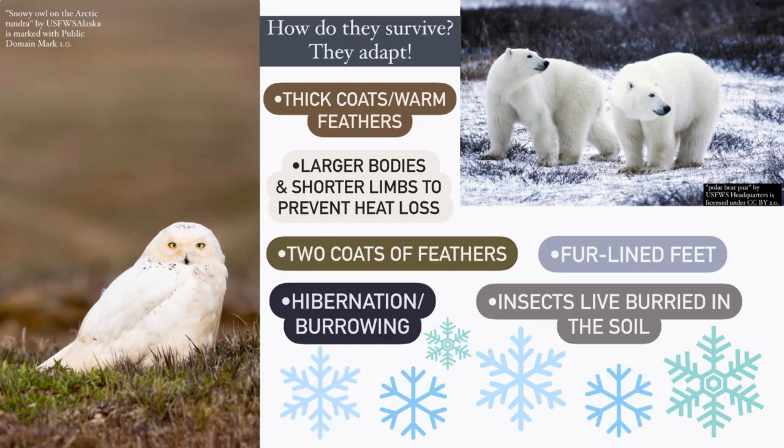In order to survive the conditions of the tundra, the animals have to adapt. Animals found in the tundra tend to have larger bodies and shorter limbs and tails in order to retain heat better and prevent heat loss. Birds have adapted to have two coats of feathers to keep them warm as well. Many other animals have thick, warm fur. Insects will spend practically their whole lives buried in the ground for shelter from the weather. Some animals, like bears, will even hibernate in the winter to keep out of the coldest weather.